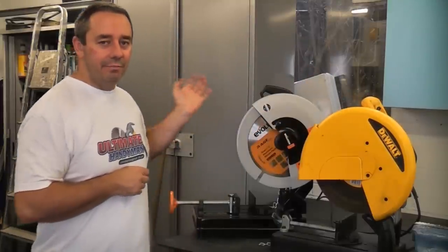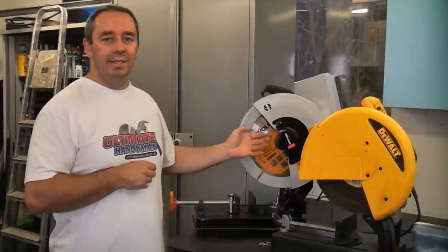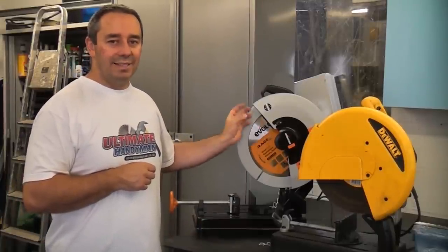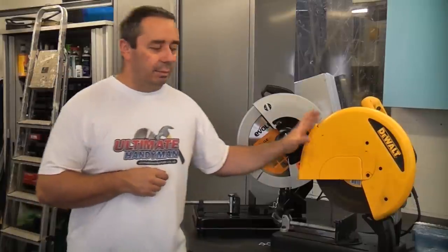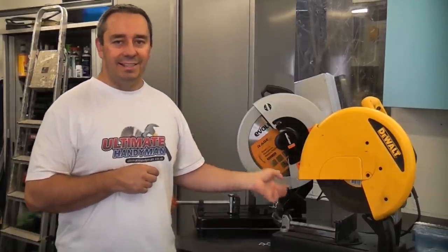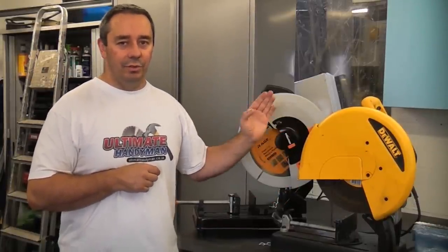You will notice that the difference on these two machines is the blade. This is a special blade that can cut metal, wood and plastic all with the same blade. The blade on this is an abrasive disc. This should only be used for cutting steel.